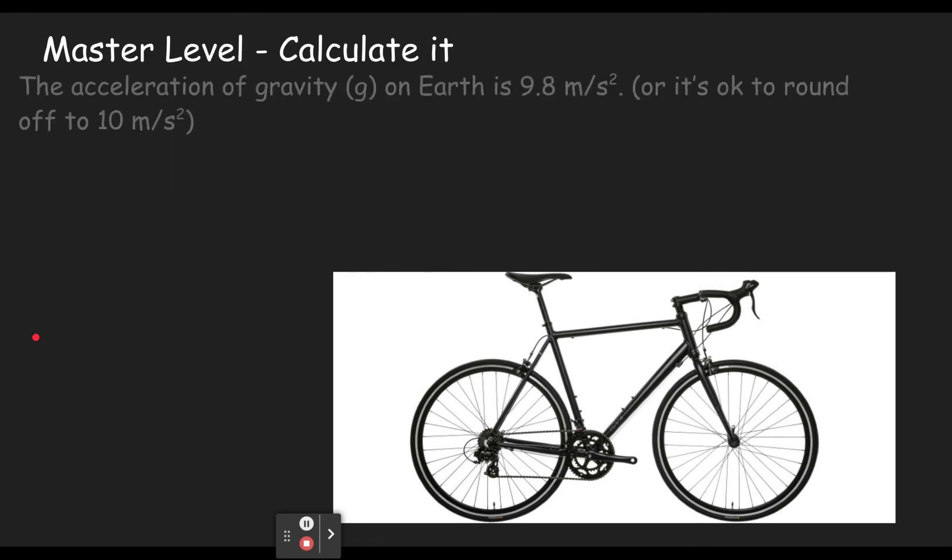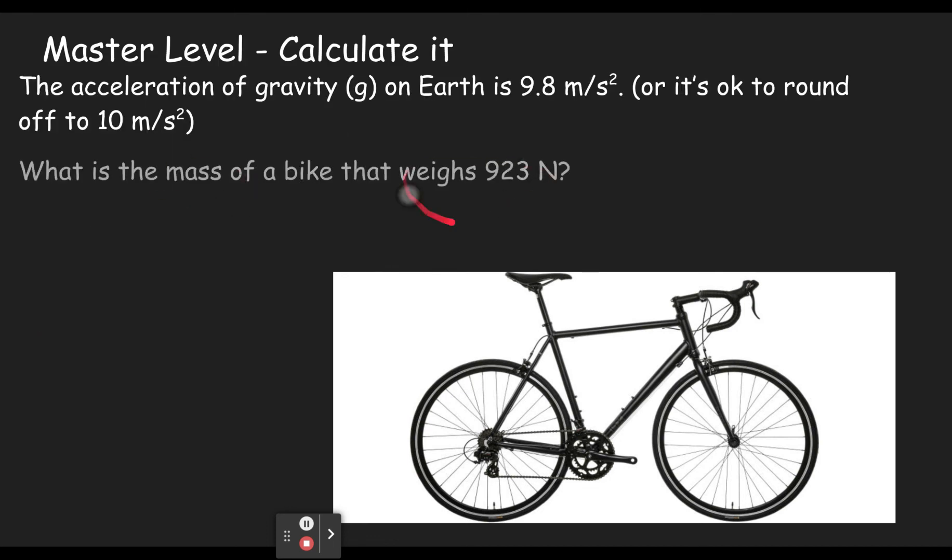The next problem has you calculate the mass based on the weight. So we plug in. The mass is the thing we're looking for. So we put question mark. Weight is 923. Acceleration of gravity is 9.8.